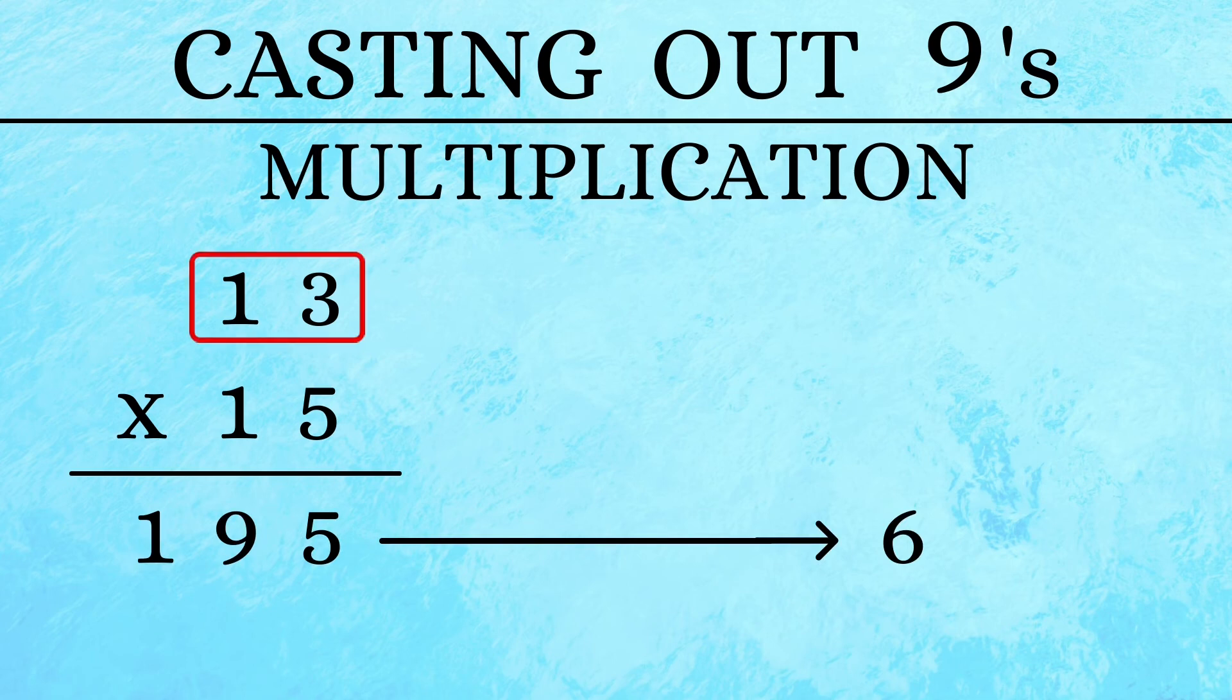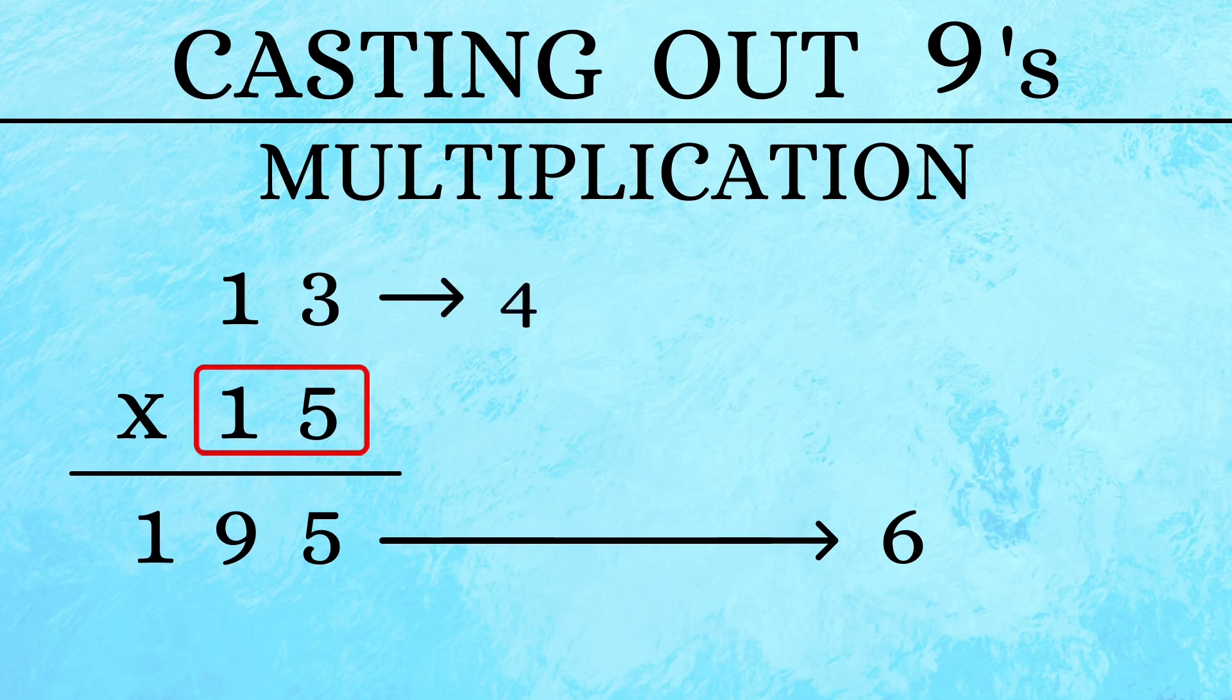Then moving on to our question. First number 13: 1 plus 3 is 4. Second number 15: 1 plus 5 is 6. Now note carefully.